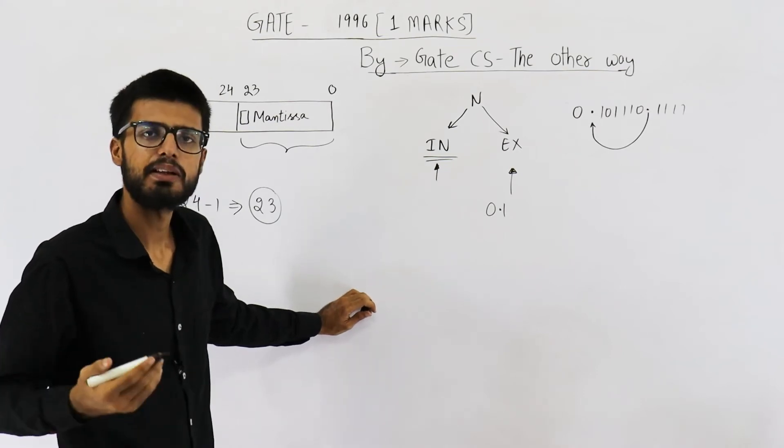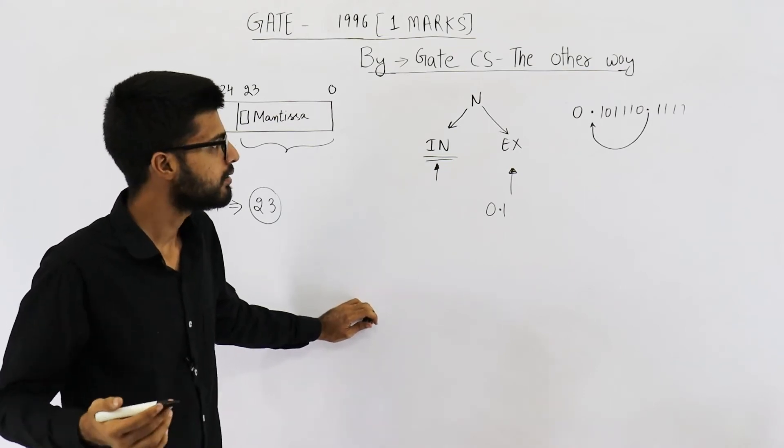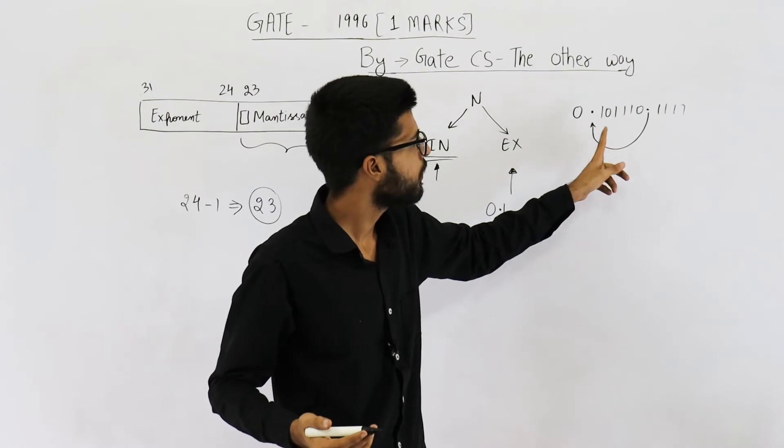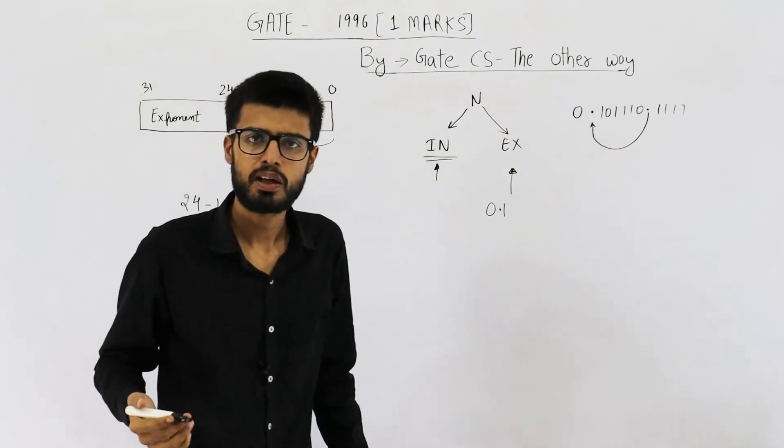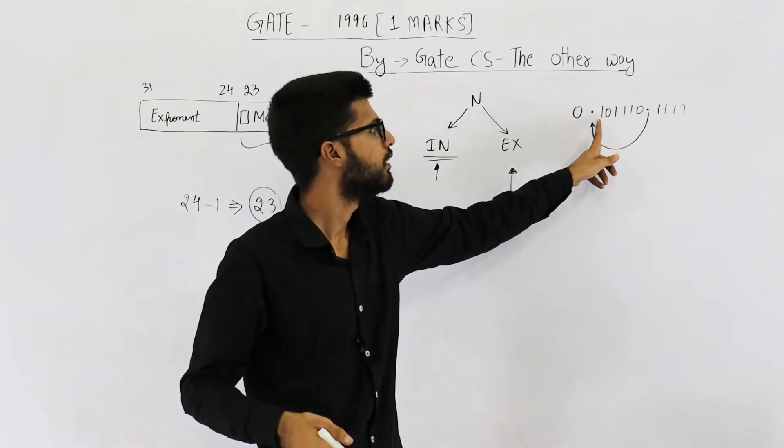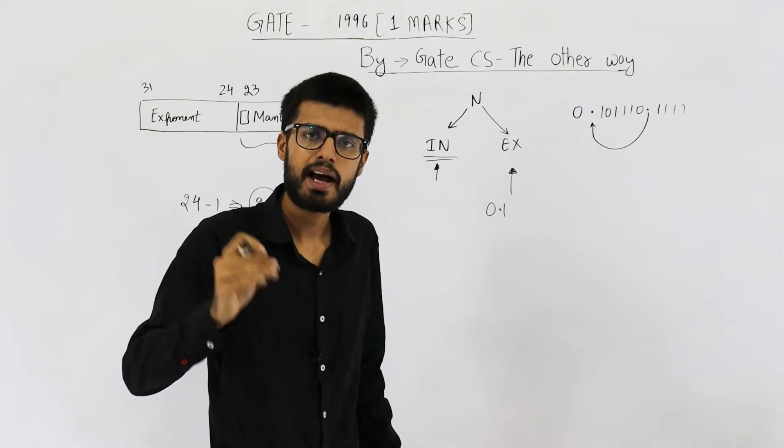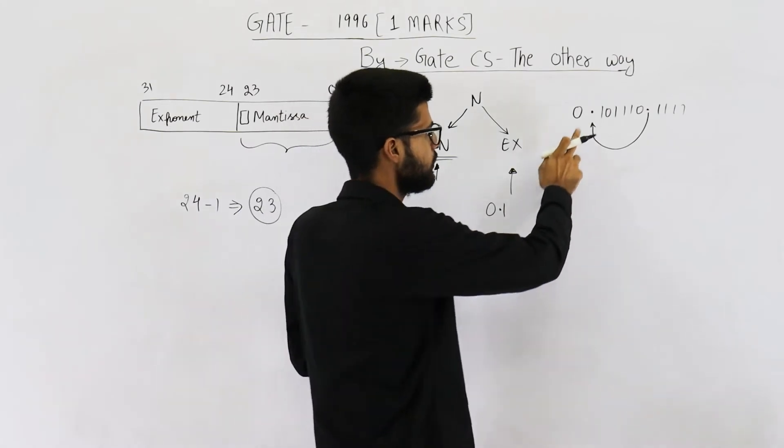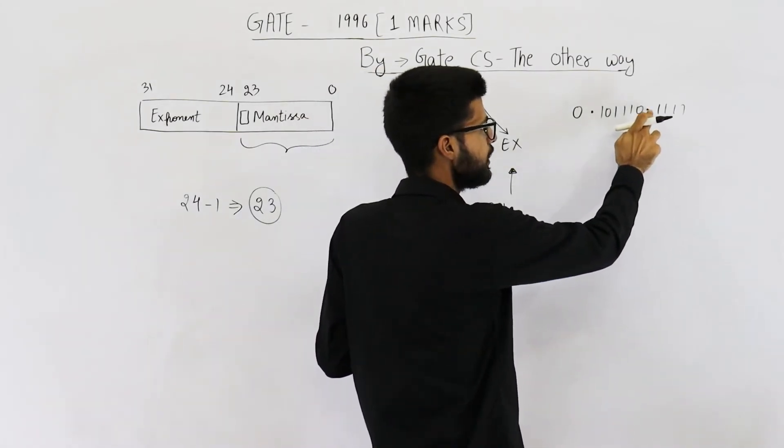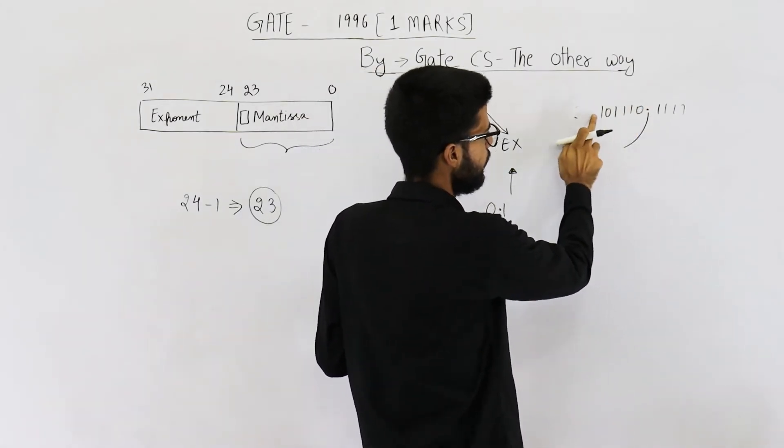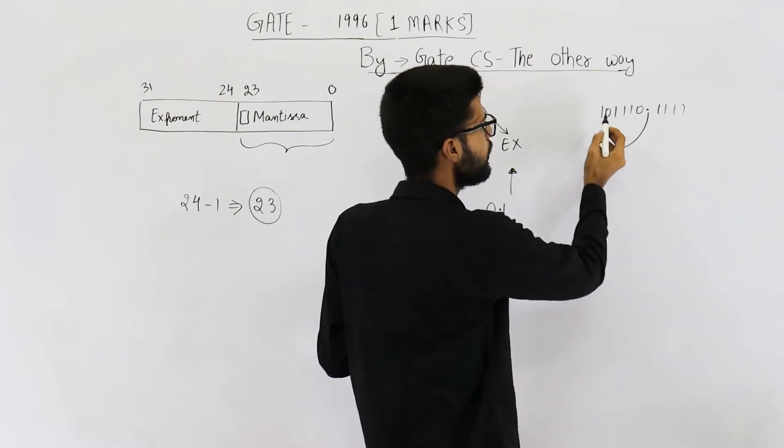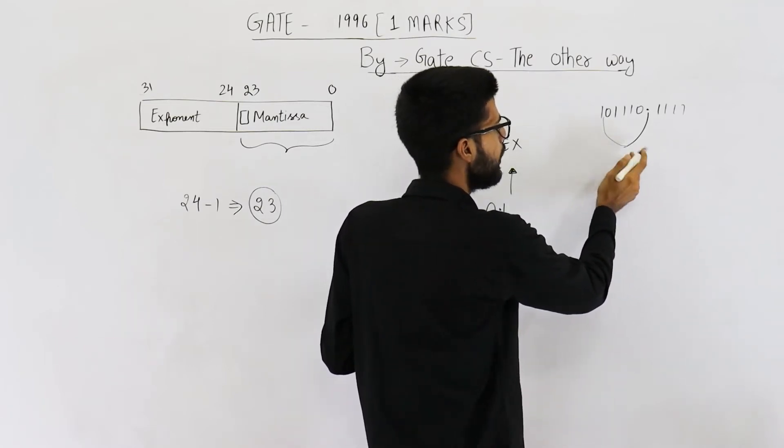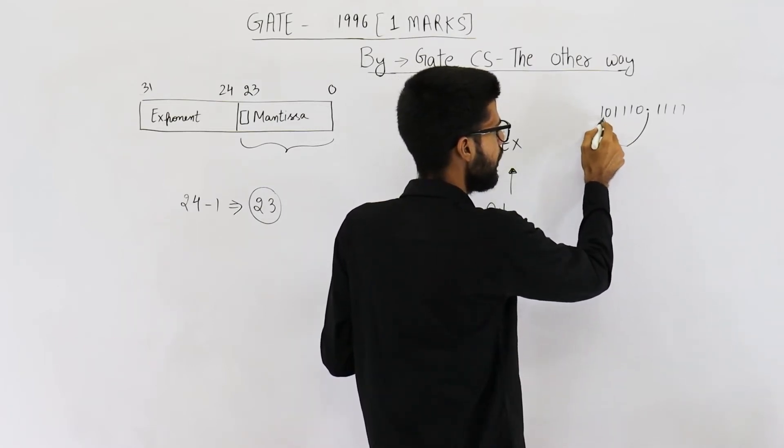Now, people came up with a better approach. They say, if the number is always going to begin from 0.1, why do we even save this one? Just consider that the number has an implicit one. That is the reason we use implicit normalization. That means, instead of shifting this radix point here, just shift it here. That means, keep the radix point after the first one.